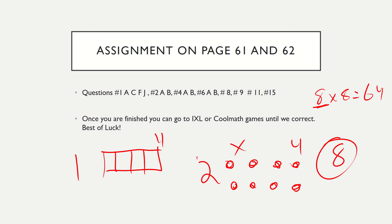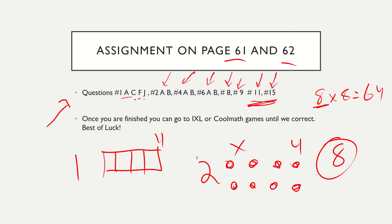You guys can rewatch the lesson if you want. Now you're going to have to do the assignments. On page sixty-one and sixty-two, you're going to do question one: A, C, F, J — they're listing factors. And you're going to do two A, B; four A, B; six A, B; eight, nine, eleven, and fifteen. Eleven and fifteen are word problems where you have to actually apply what you learned. Once you're finished, you can go to IXL or CoolMathGames until we correct. Best of luck and thanks for tuning in — have a great day and a great weekend since it's Friday. Bye!